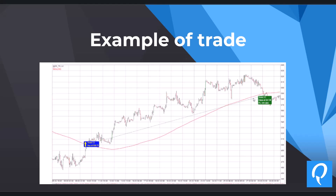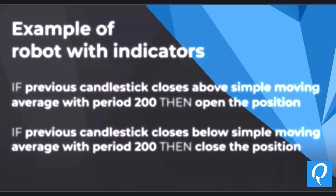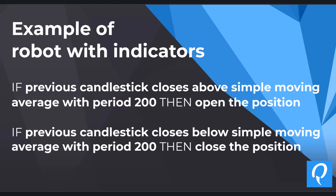And here is the point where the price got below the simple moving average. At the graph, we saw these two conditions: if the previous candlestick closes above the simple moving average at period 200, then open the position; and if the previous candlestick closes below the simple moving average at period 200, then close the position.